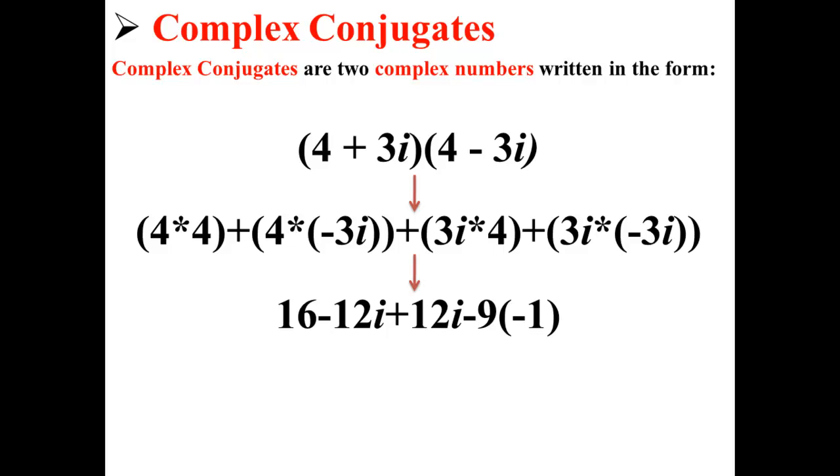As you can see, we have negative 12i and positive 12i, so the i's cancel out, leaving us with 16 plus 9 for a final answer of 25.